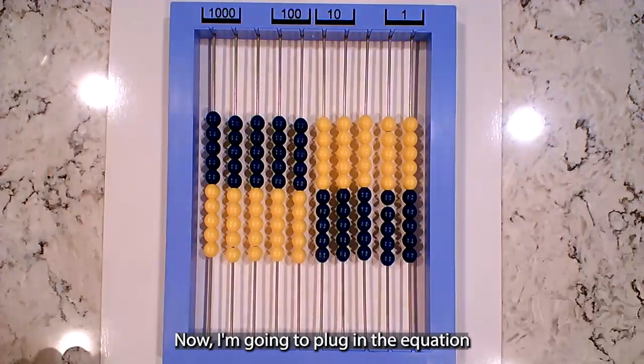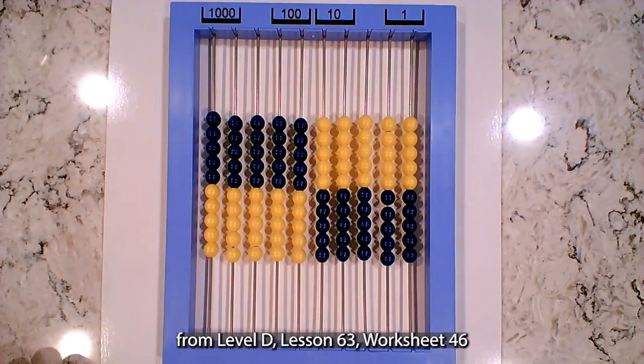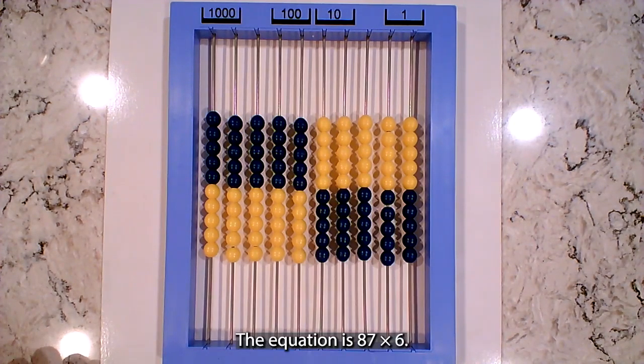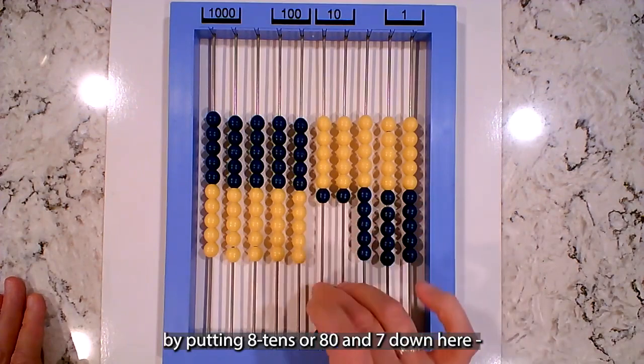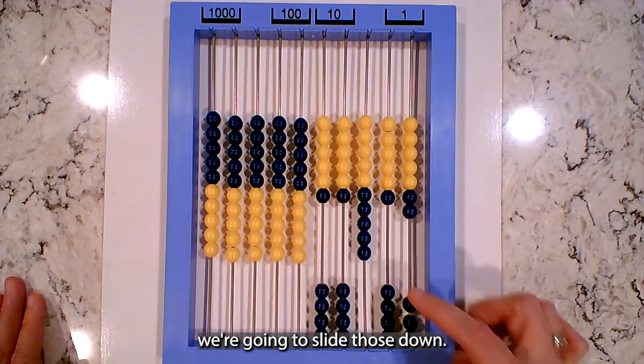Now I'm going to pull an equation from Level D Lesson 63 Worksheet 46, and the equation is 87 times 6. So we're going to start by putting eight tens, or 87, down here. We're going to slide those down.